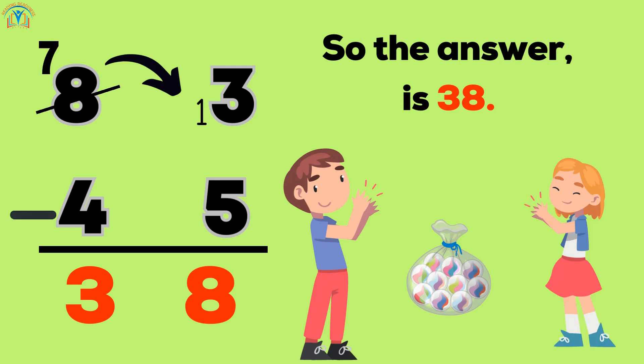Then, we subtract 5 from 13, which gives us 8 in the ones place. Next, we move to the tens place. 7 is greater than 4, so we directly subtract 4 from 7, which gives us 3 in the tens place. So the answer is 38.